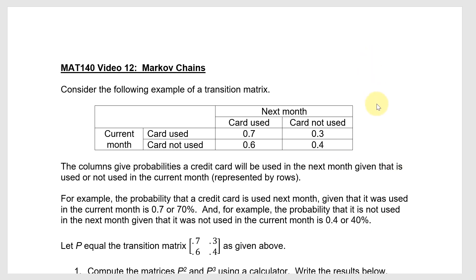Notice how it would make sense to expect that the probabilities on each row would add up to 1, or 100%. That's because the two events in each row are complementary events — either the card is used or it's not used. So the 70% probability it's used is the complement of the 30% probability that it isn't used. Similarly, there's a 60% chance it would be used and a 40% chance it's not used, assuming it was not used in the month before. Each of these probabilities, 60% and 40%, add to 100%, or a probability of 1.